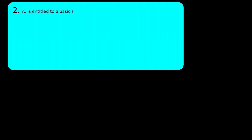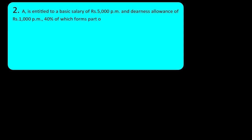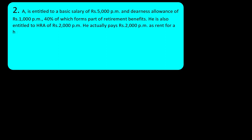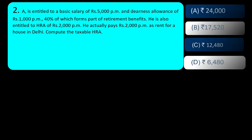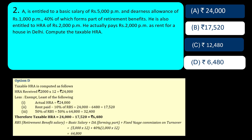A is entitled to basic salary of Rs. 5,000 per month and dearness allowance of Rs. 1,000 per month, 40% of which forms part of retirement benefits. He is also entitled to HRA of Rs. 2,000 per month and actually pays Rs. 2,000 per month as rent for a house in Delhi. Compute the taxable HRA. HRA exemption is calculated using three limits — first is actual HRA received.